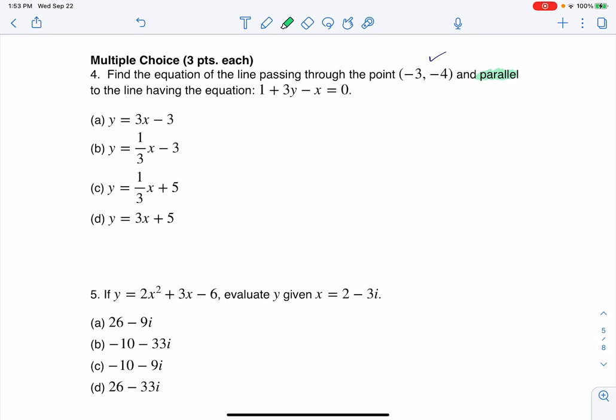We know that lines that are parallel have the same slopes. So what I want to do is figure out the slope of this line, and then I'll use that slope and this point to figure out the equation of the line I'm interested in.